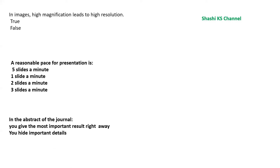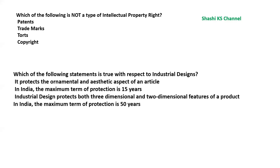Question 17: In the abstract of a journal article, you give the most important result right away — you do not hide the most important details.